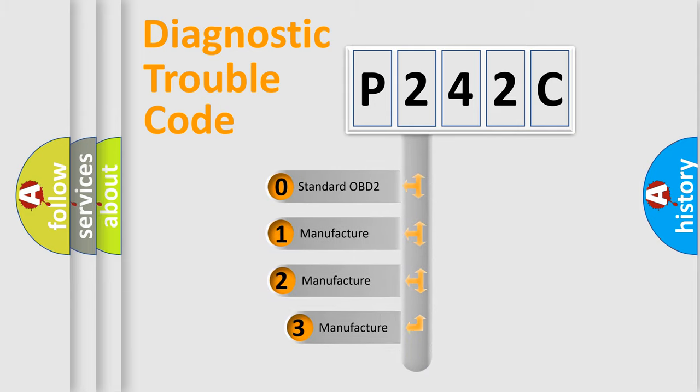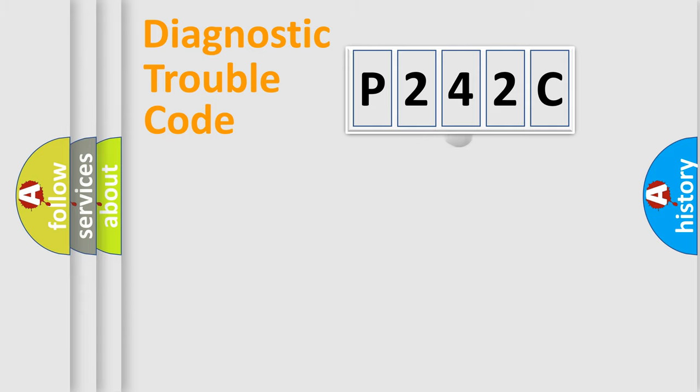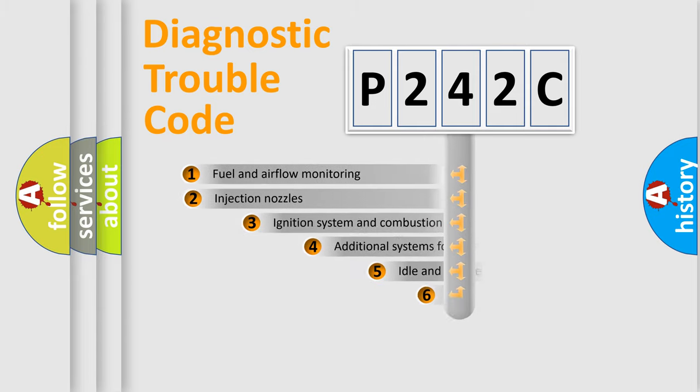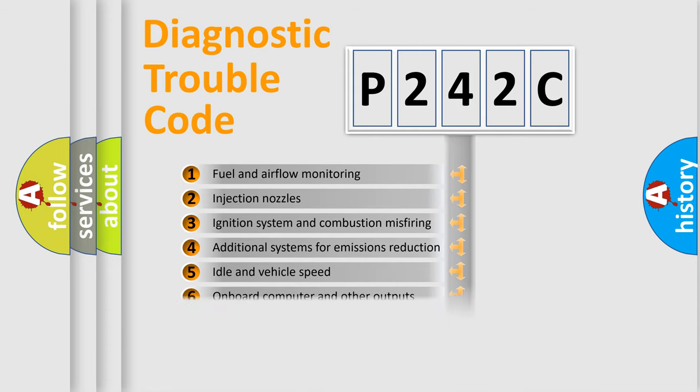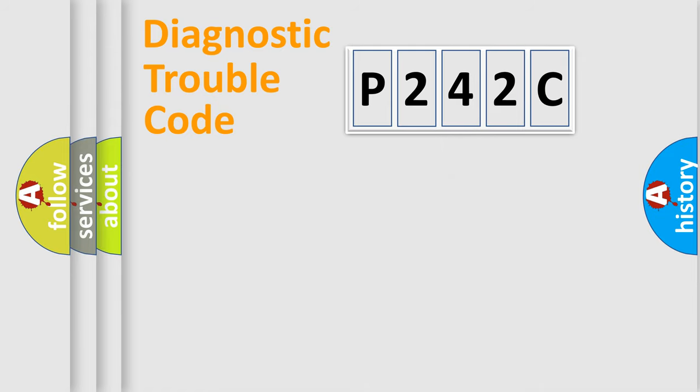If the second character is expressed as zero, it is a standardized error. In the case of numbers 1, 2, 3, it is a car-specific error. The third character specifies a subset of errors. The distribution shown is valid only for the standardized DTC code.